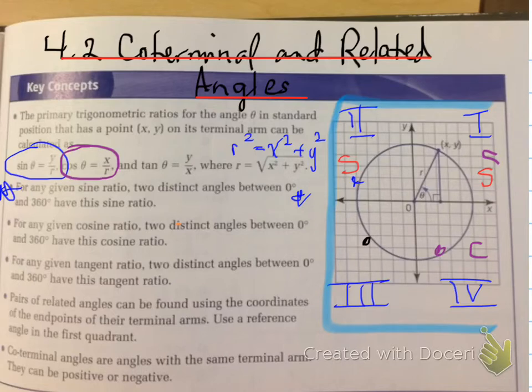x is positive in both quadrants, and r remains positive. The trickiest one is tan θ. Tan θ will be positive when x and y are both positive, or both negative, because a negative divided by a negative is positive. So tan θ = y/x can only be positive in the first and third quadrants.